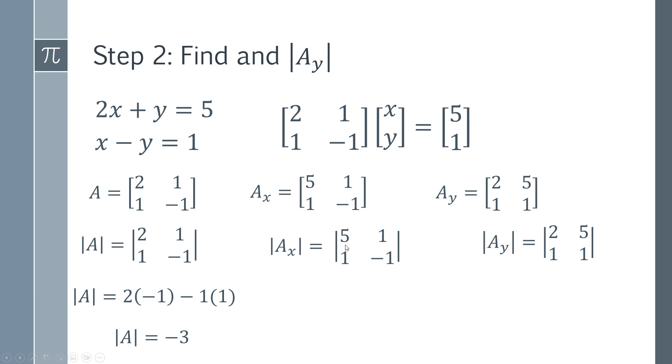For AX, it would be 5 times minus 1 minus 1 times 1, which gives us minus 6. For AY, we do 2 multiplied by 1, then 5 multiplied by 1 and subtract, giving us minus 3. We've got the determinants of our three key matrices.